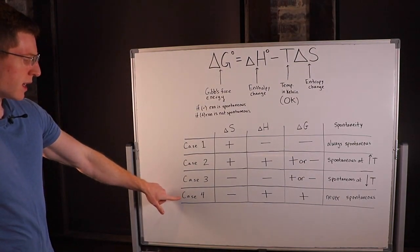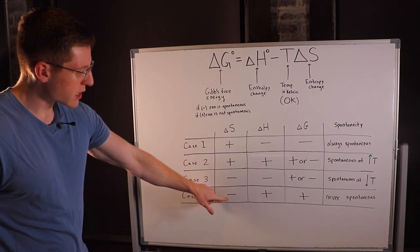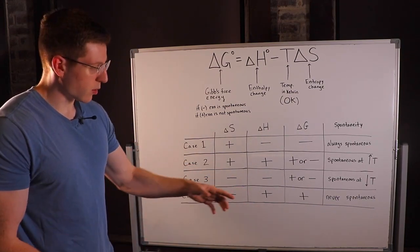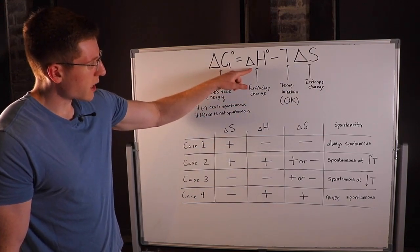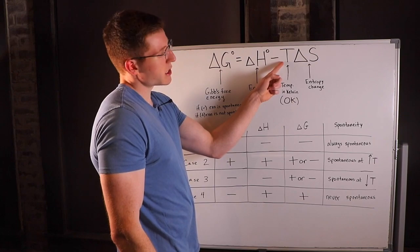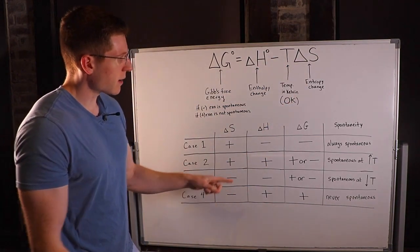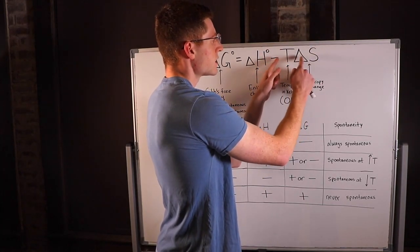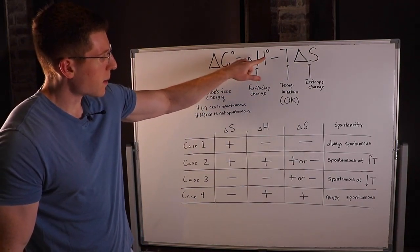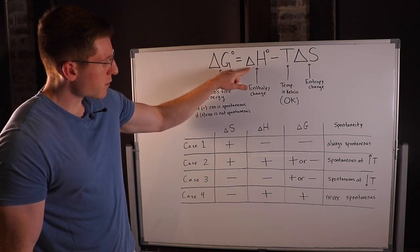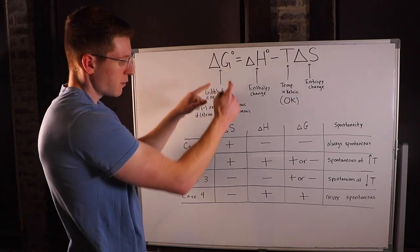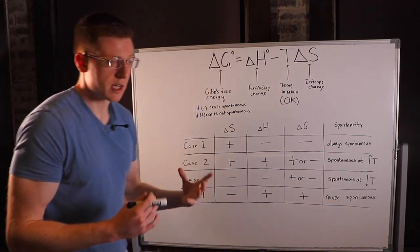The opposite scenario happens in Case 4. Delta S is negative — a decrease in entropy — while delta H is positive, meaning we absorbed heat in an endothermic reaction. T is positive, so multiplying by a negative delta S makes the T·delta S term negative, giving us minus a negative. With a positive delta H, we have a positive number plus another number, so delta G is always positive and the reaction is never spontaneous.